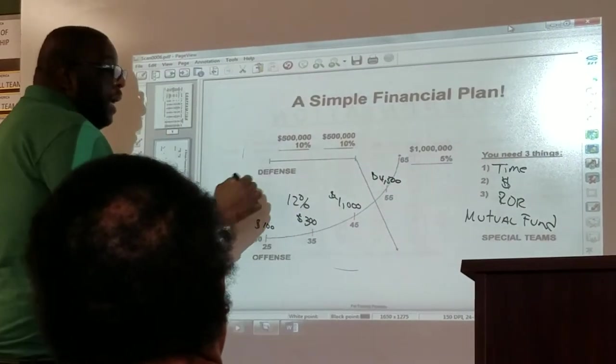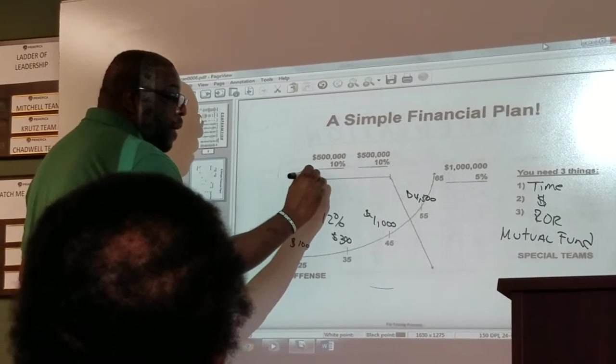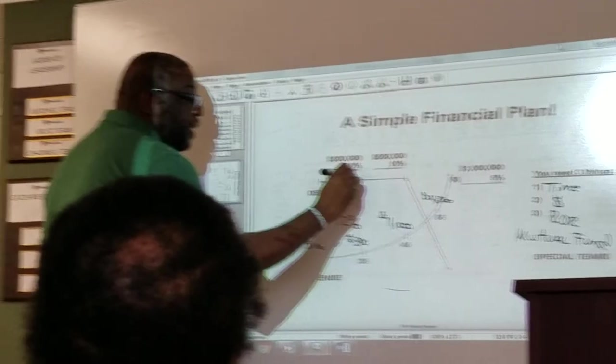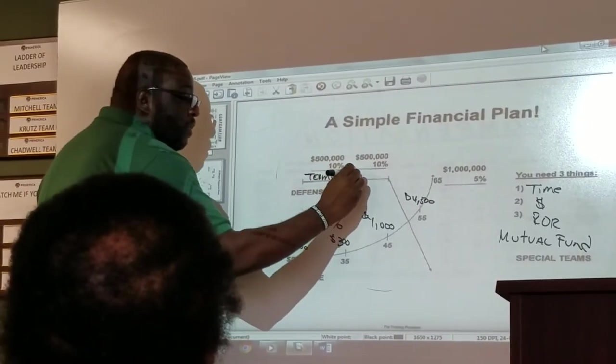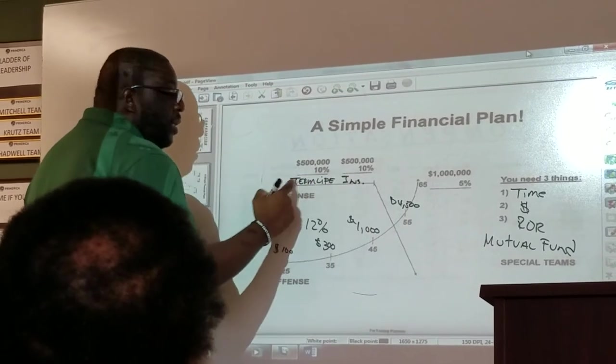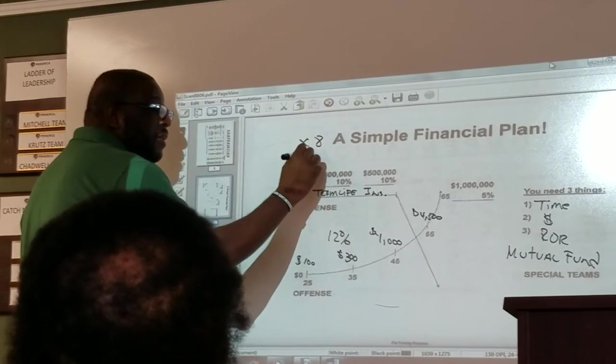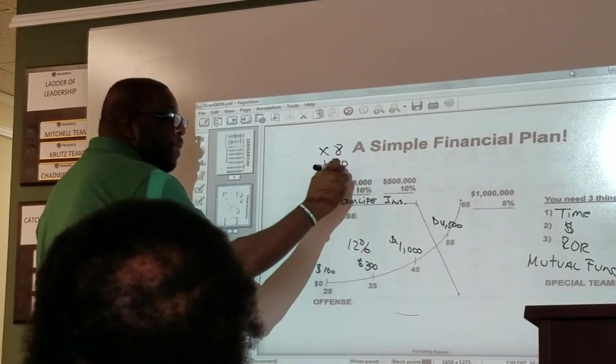Then you have defense. What do we do to protect your family? We offer something that you just studied in the first session with Vernon. Term life insurance. I'll write that word right here. How much term insurance should you have? $8 to $10 times your salary.